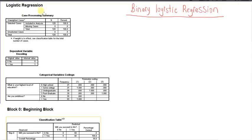The first table is the Case Processing Summary. Here you can see the number of cases included in our analysis, which is 120, the number of missing cases, which is zero, and the total number of cases in our sample, also 120. If you had some missing cases, you'd want to go back to your SPSS data view tab to determine which ones those are — maybe you're missing data for a variable, or maybe you have some outliers. Check it out and make sure everything is how it should be.